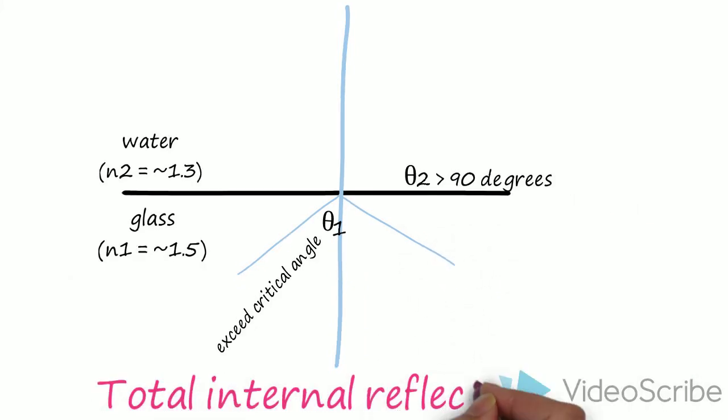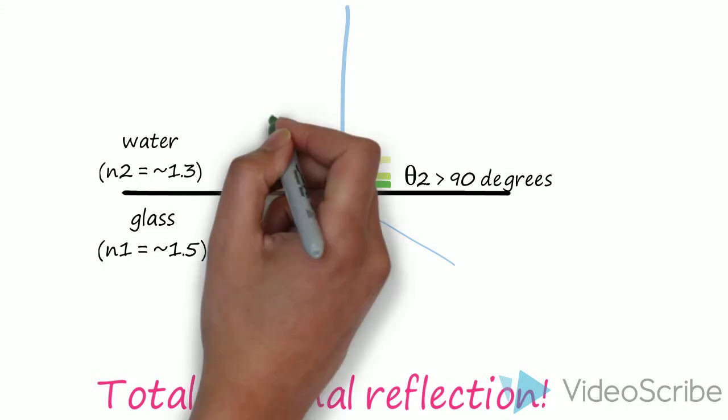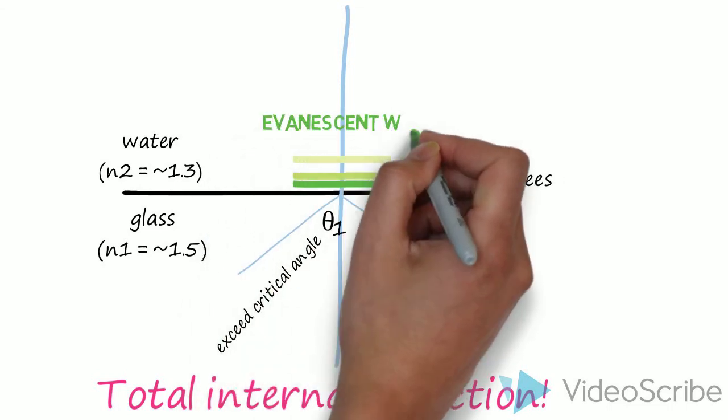If the light is totally reflected, then how do the fluorophores near the interface get excited on the other side? Well, it turns out that an evanescent wave is generated at the point of total internal reflection.